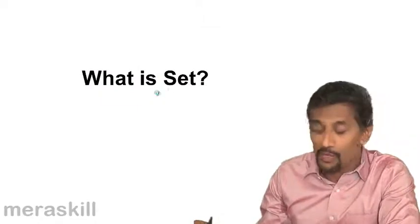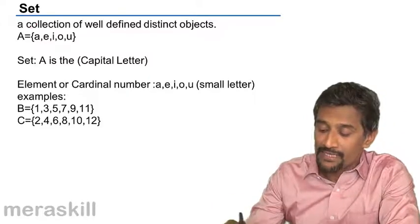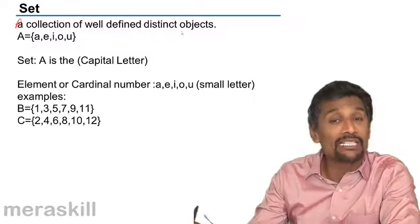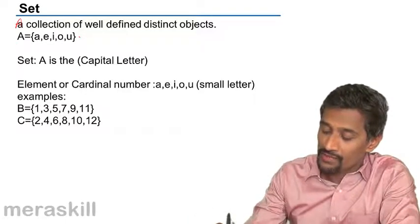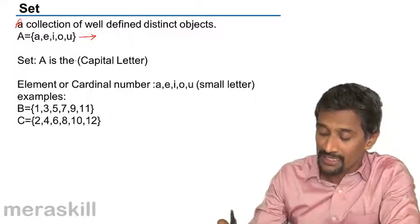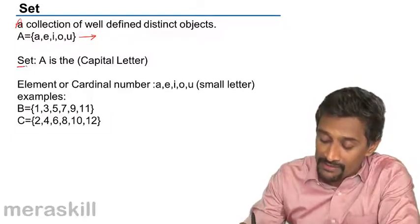We covered what a set is: a collection of well-defined distinct objects. A, E, I, O, U. So here, if you see, it means the set of vowels. A set is always denoted by a capital letter.